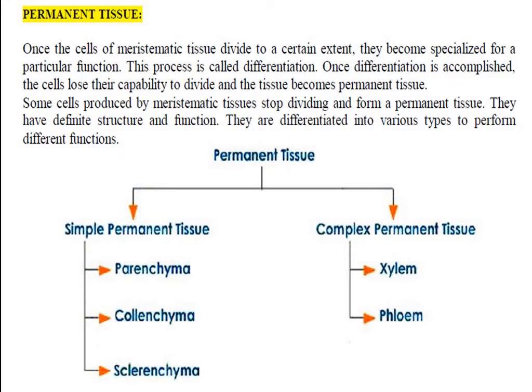The simple permanent tissues are of three types: parenchyma, colenchyma, and sclerenchyma. Complex permanent tissues are of two types: xylem and phloem. Plants contain mainly these tissues. Xylem and phloem are conducting tissues in plants. Parenchyma, colenchyma, and sclerenchyma are the simple permanent tissues we are going to learn about.